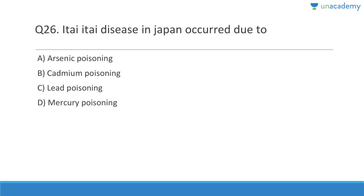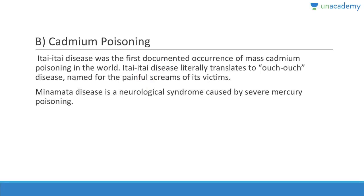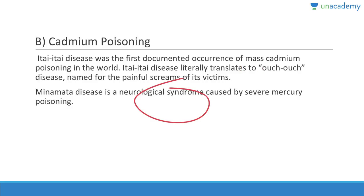Question twenty-six: Itaitai disease is related to cadmium poisoning — many people confuse this with mercury poisoning, which is Minamata disease. Lead poisoning is called plumbism. Itaitai disease was the first documented occurrence of mass cadmium poisoning in the world and literally translates to 'ouch ouch' because of the painful screams of victims. Minamata disease is a neurological syndrome caused by severe mercury poisoning.